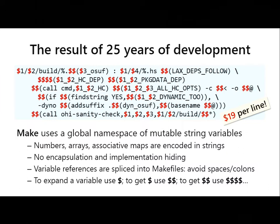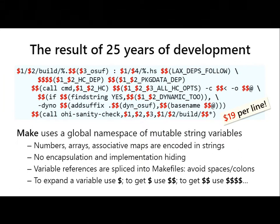Make uses a horrible programming model of a global namespace of mutable string variables. Even numbers have to be encoded into strings, not to mention arrays and maps. You have no encapsulation or information hiding whatsoever. Variables are spliced into makefiles, so if you have a space or a colon in your variable you're in trouble. To expand a variable you use a dollar; to get a dollar in the expansion you use double dollar; to get double dollars you use quad dollars. That's where all the dollars come from.